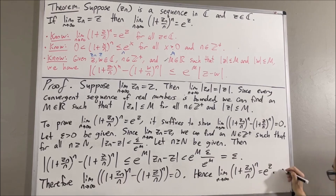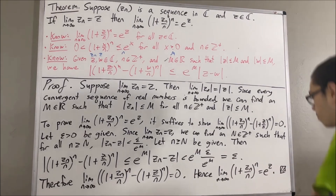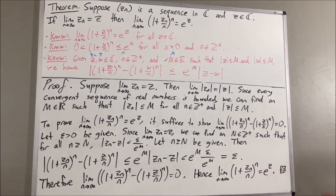And that was enough to say that the limit of 1 plus zn over n to the power of n equals e to the z. This completes the proof. That's pretty much it for this video.